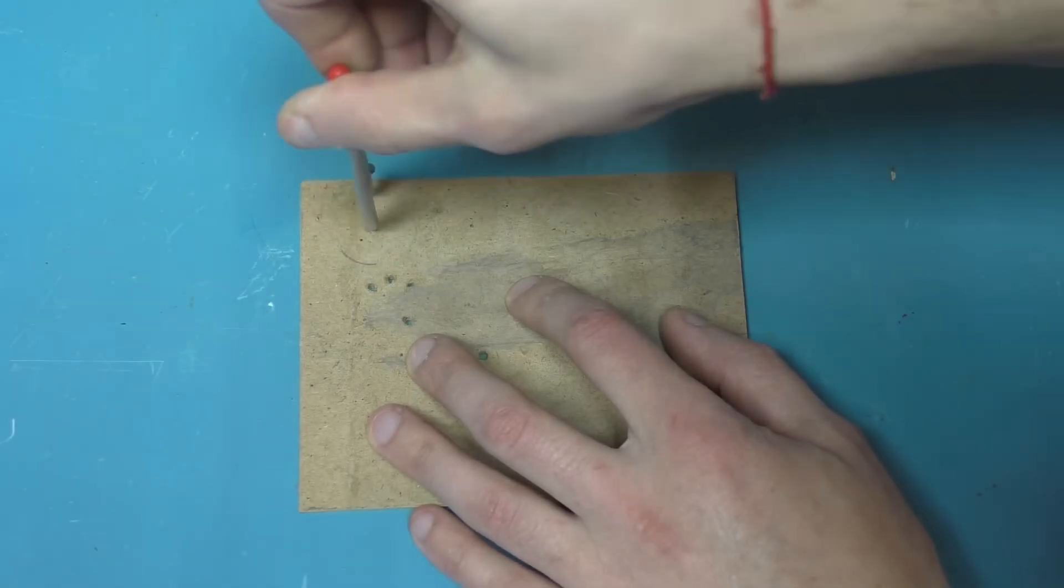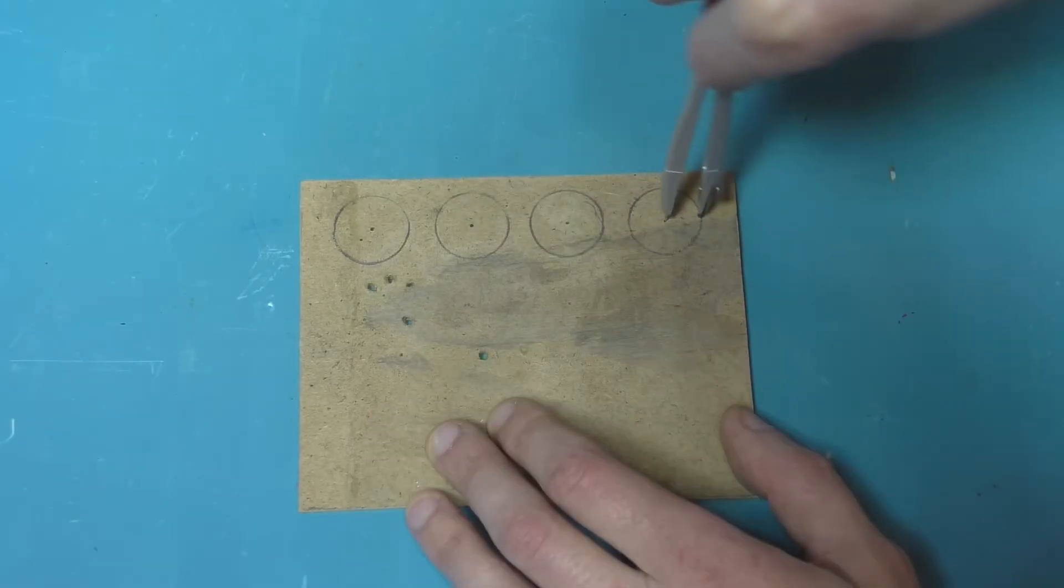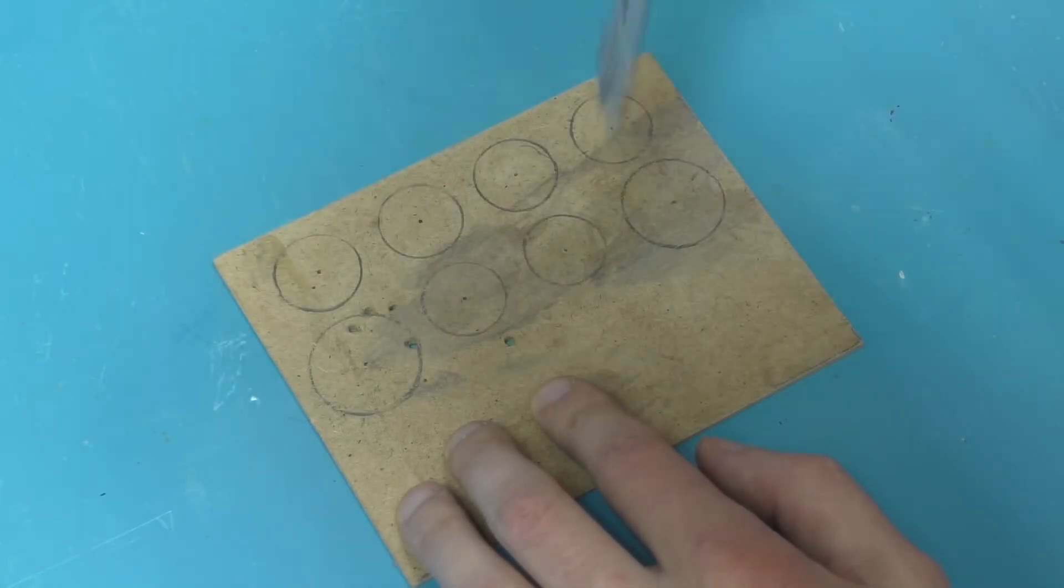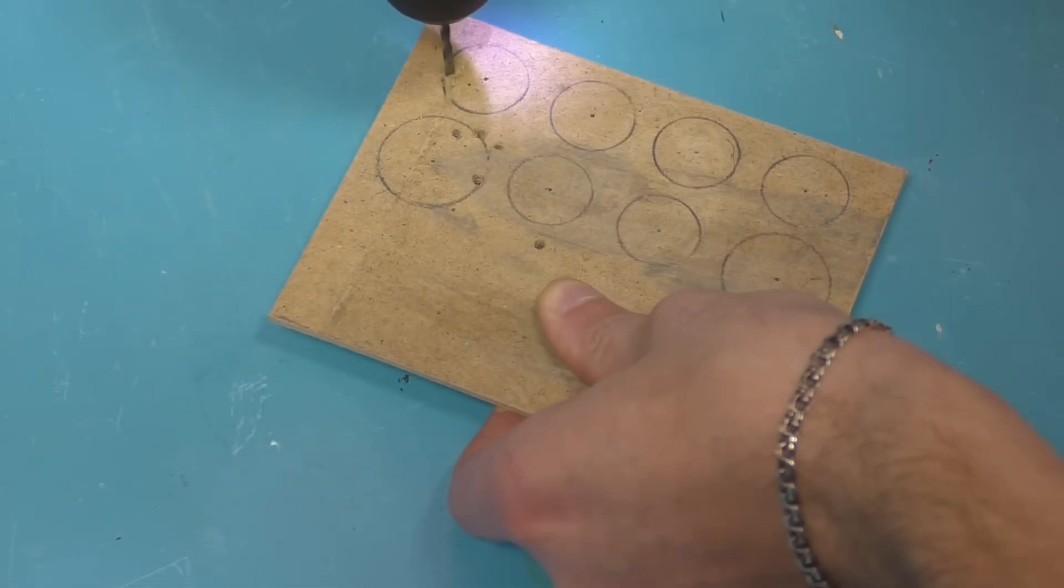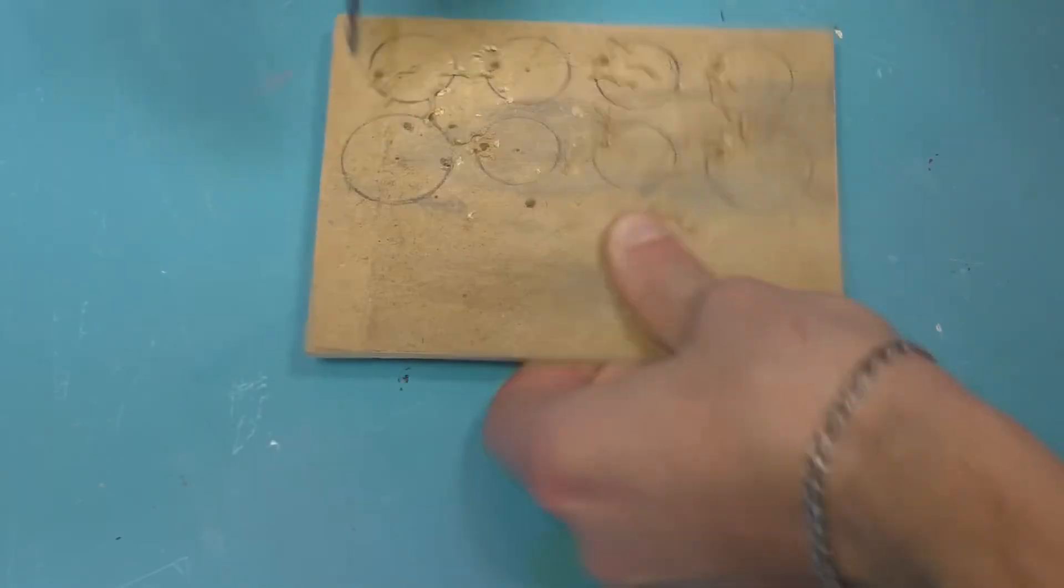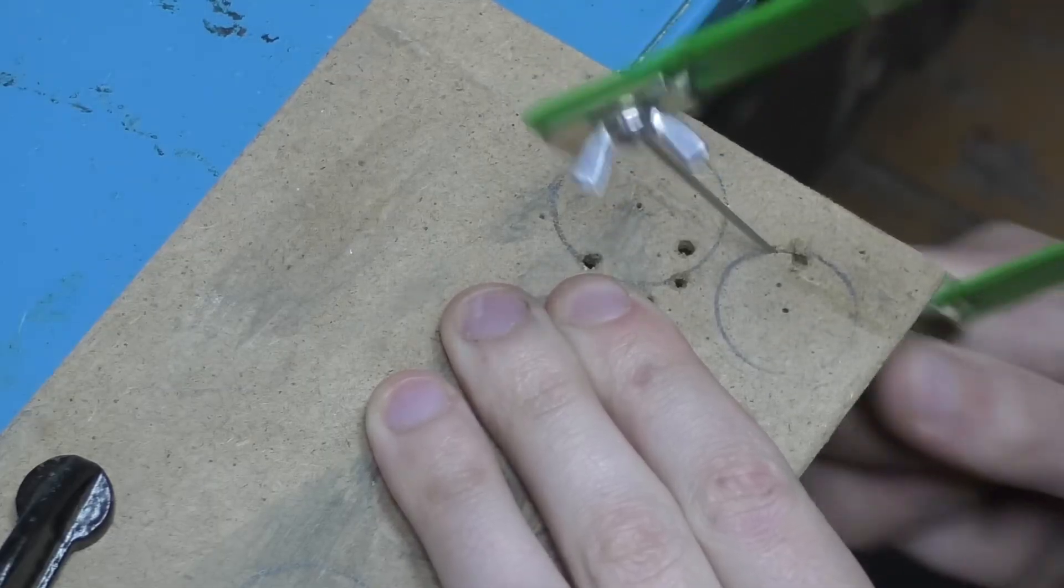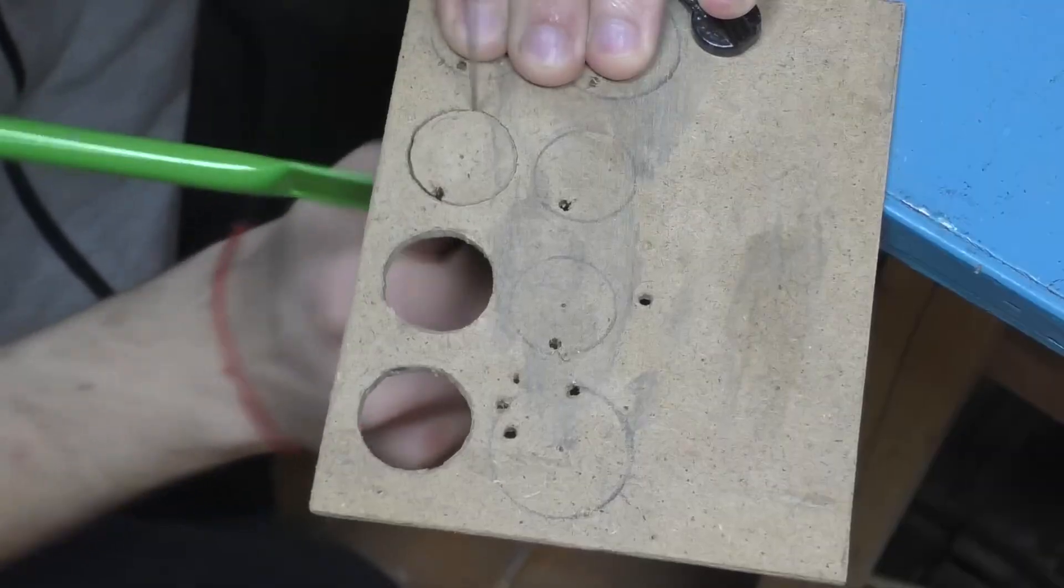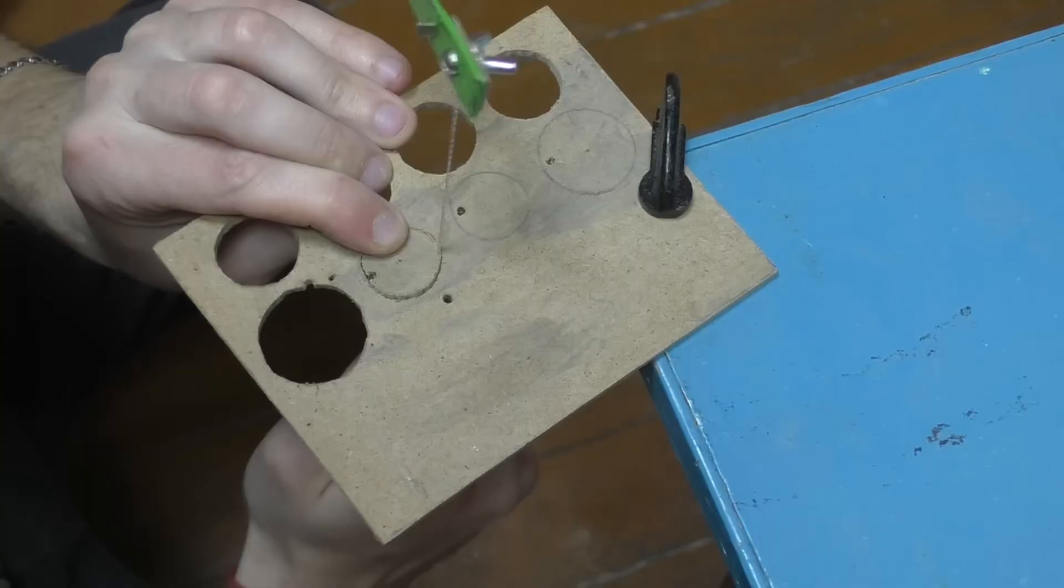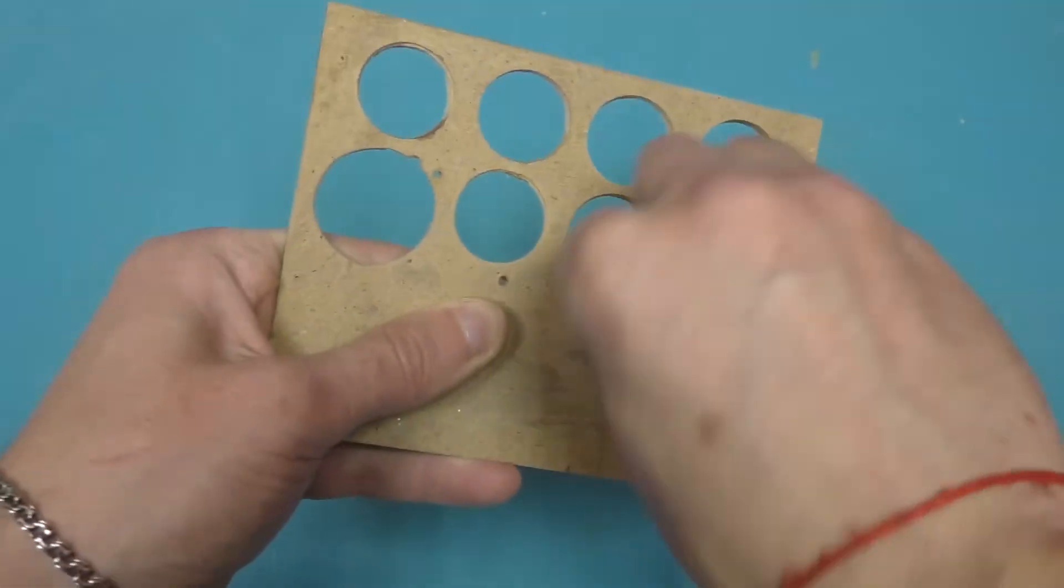Let's take a piece of fiberboard and, using a compass, draw circles with the same diameter as the capacitors. In each circle you need to drill a hole at the edge and then cut them out using a jigsaw. Using sandpaper we smooth out the uneven edges a bit.